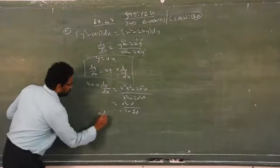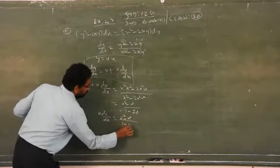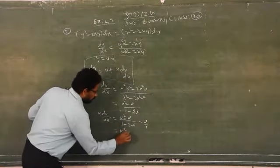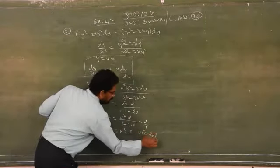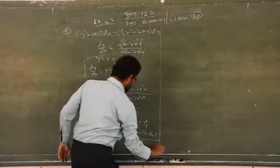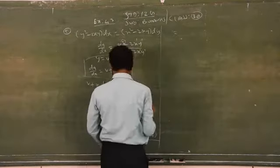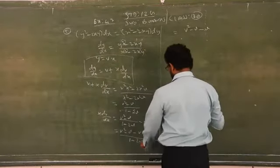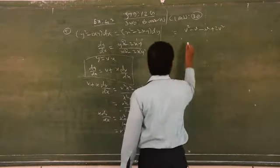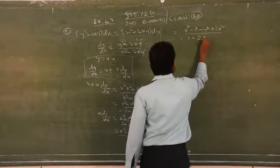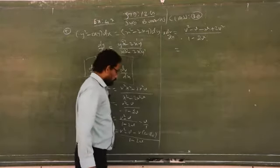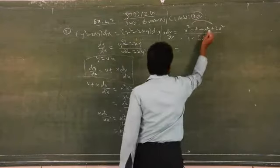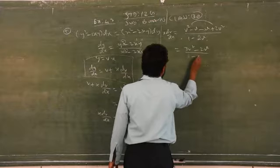Now you have to keep: x·(dv/dx) = (v² minus v) by (1 minus 2v). When you transfer plus v to the right side it becomes minus v by 1. Cross multiply: you will get (v² minus v) of (1 minus 2v) over (1 minus 2v). So, v² minus v — take minus v inside the bracket — you get v² plus 2v² plus 2v² over (1 minus 2v), with x·(dv/dx) on the left.